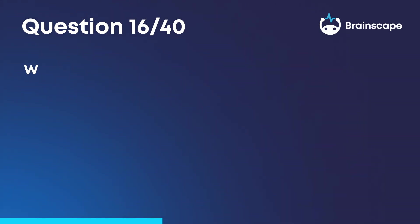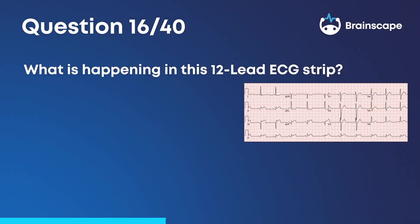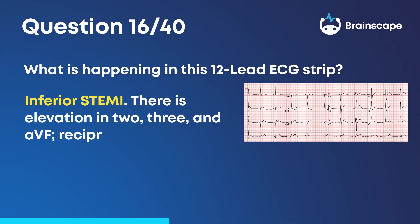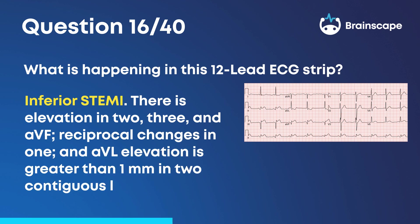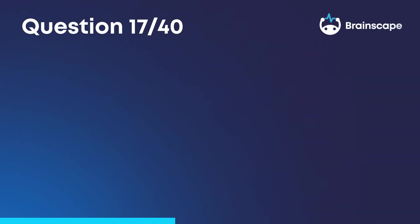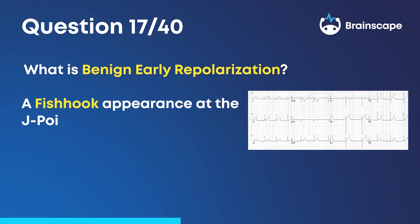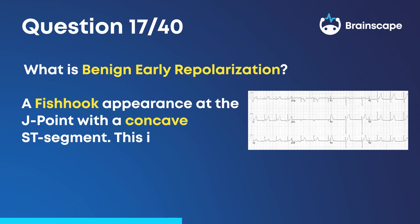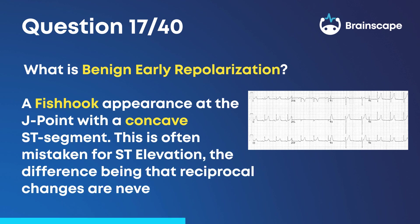Question 16: What is happening in this 12-lead ECG strip? Inferior STEMI. There is elevation in leads 2, 3, and AVF, reciprocal changes in lead 1, and AVL. Elevation is greater than 1 mm in 2 contiguous leads. Question 17: What is benign early repolarization? A fishhook appearance at the J-point with a concave ST segment. This is often mistaken for ST elevation, the difference being that reciprocal changes are never present.